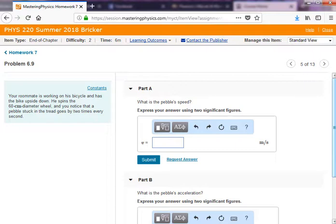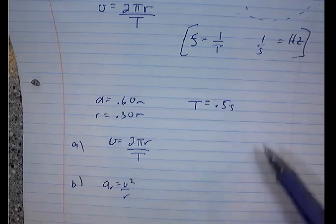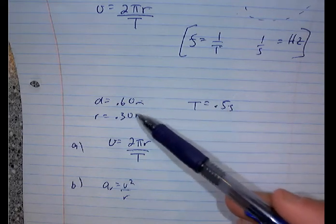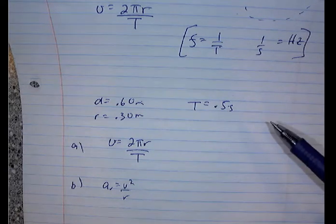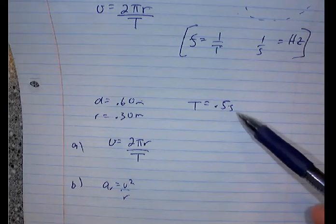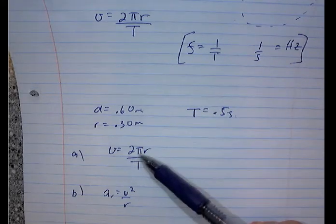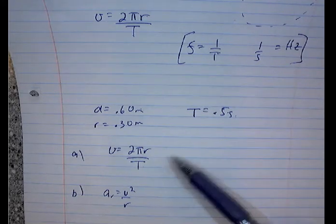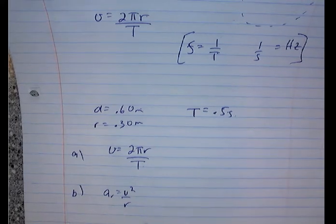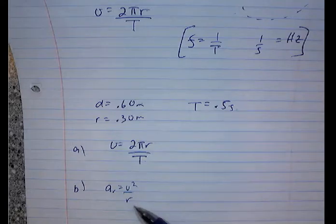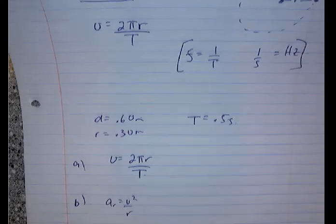The speed of the pebble is similar to the previous problem: 2πr divided by the period, just a bit trickier because we had to figure out the period from the given information. Then part B asks for the pebble's acceleration. The speed is 2πr over the period, and the acceleration is v²/r — the acceleration towards the center, because the direction keeps changing.